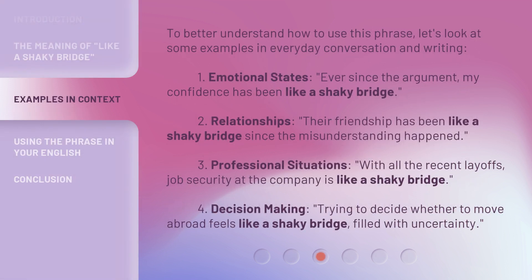To better understand how to use this phrase, let's look at some examples in everyday conversation and writing. First, emotional states: ever since the argument, my confidence has been like a shaky bridge. Second, relationships: their friendship has been like a shaky bridge since the misunderstanding happened. Third, professional situations: with all the recent layoffs, job security at the company is like a shaky bridge. Fourth, decision-making: trying to decide whether to move abroad feels like a shaky bridge, filled with uncertainty.